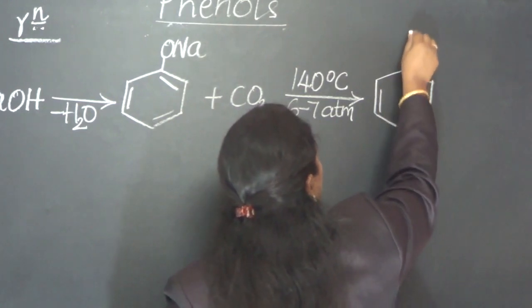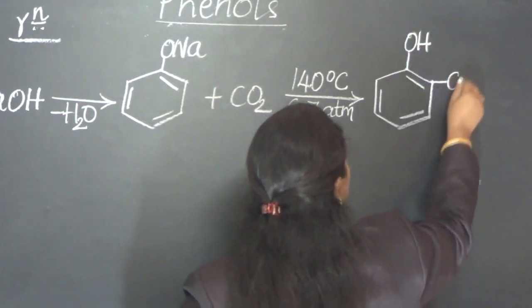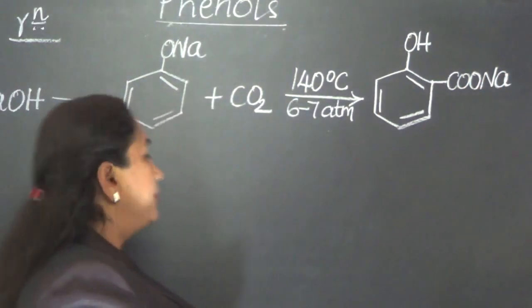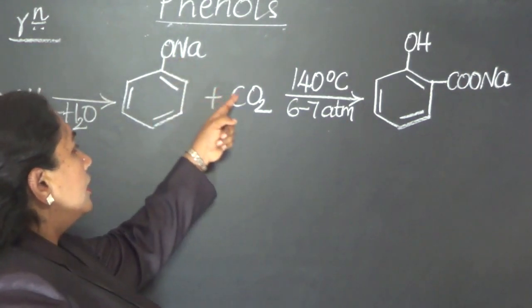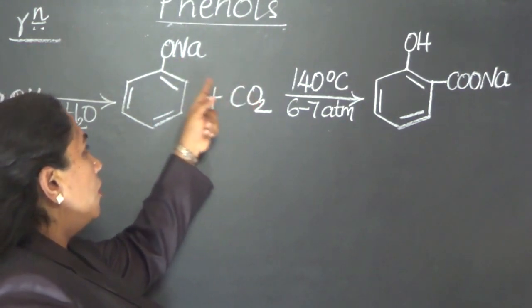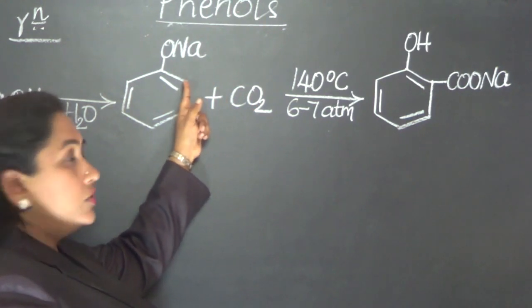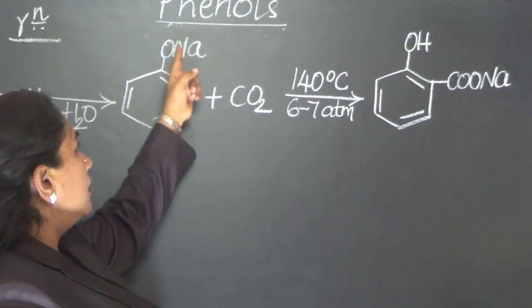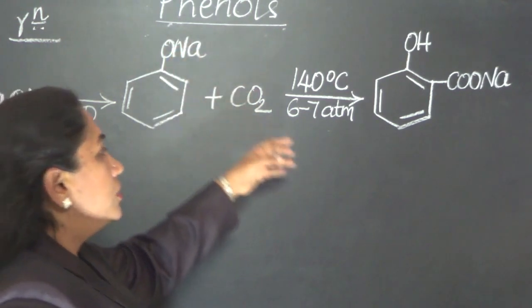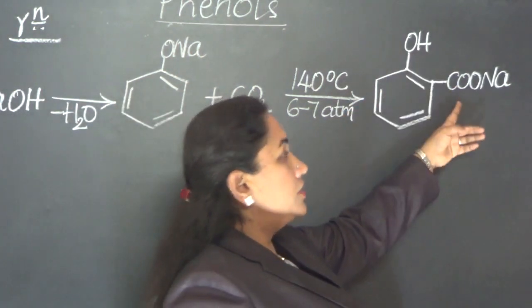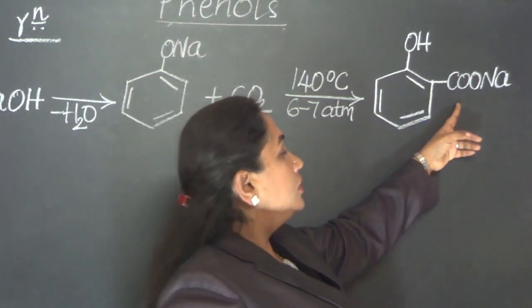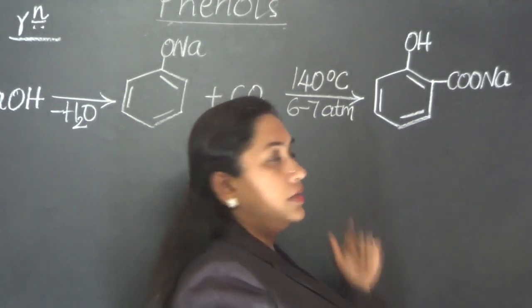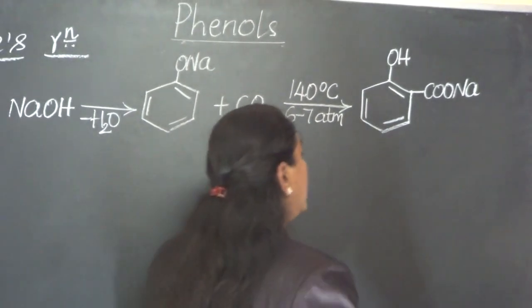Here it is OH and here it is COONa. I repeat how this has taken place. Na from here will attach with this COO, which will be trying to attach to this position of the benzene ring. Hydrogen which was present here earlier will take up the place of Na. Therefore we have OH here and COONa here. That means we landed up in the formation of sodium salt of salicylic acid, that is sodium salicylate.